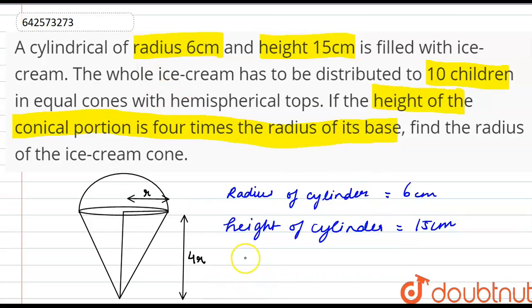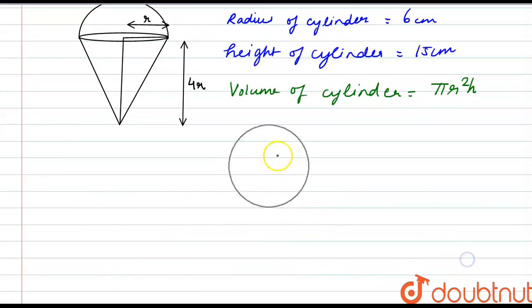As we know the volume of cylinder is pi r squared h. So we have the volume as pi into 6 squared into h is 15. So it comes to 540 pi cm cubed. So this is the volume of the cylinder.